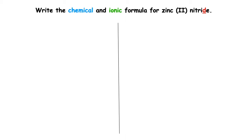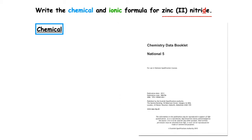This first example wants us to write the chemical and ionic formula for zinc II nitride. It ends in -IDE. The D stands for double, which means we're going to be working with just two different elements, which can be found on page six of your data booklet.